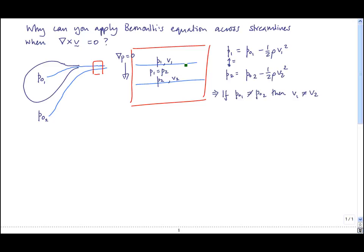So now let's consider a little bit of fluid here. We've got V1 on the top and V2 on the bottom. If P01 is bigger than P02, then the speed at the top of this little element of fluid is big, and the speed at the bottom is small. And that means this bit of fluid must be rotating.